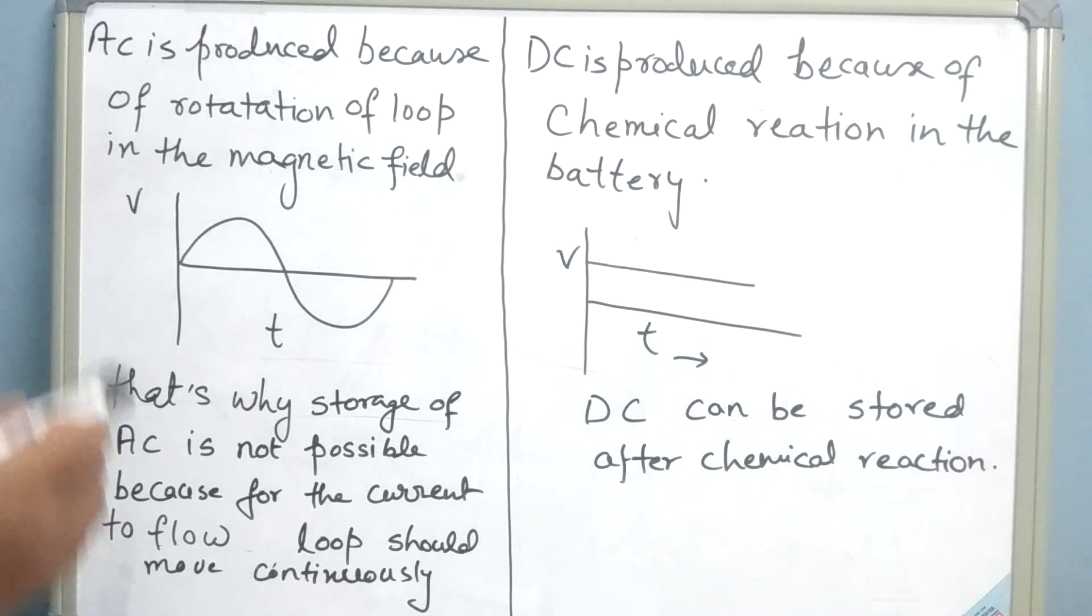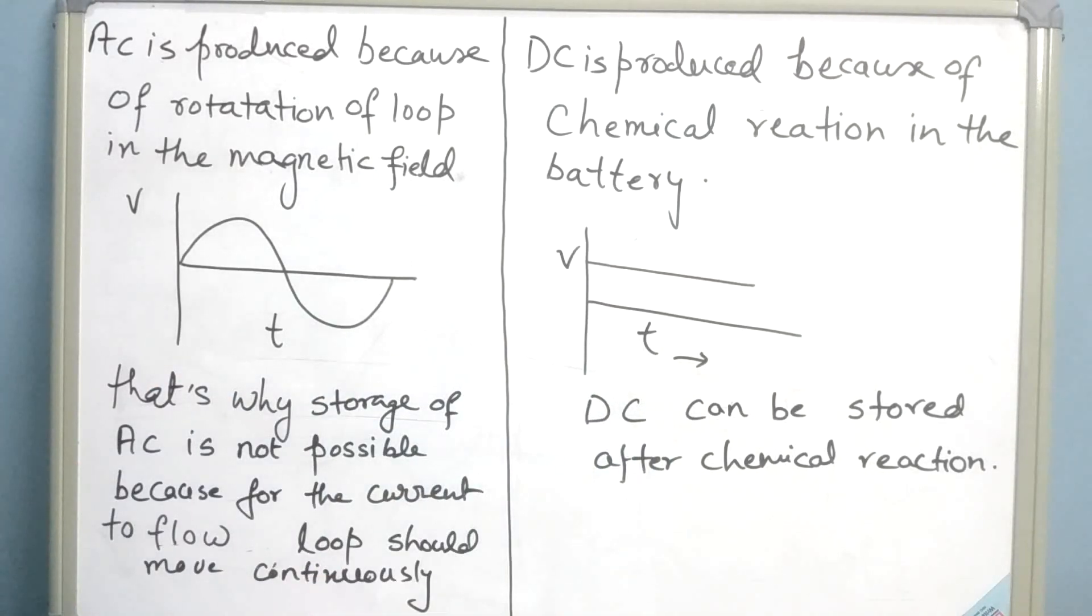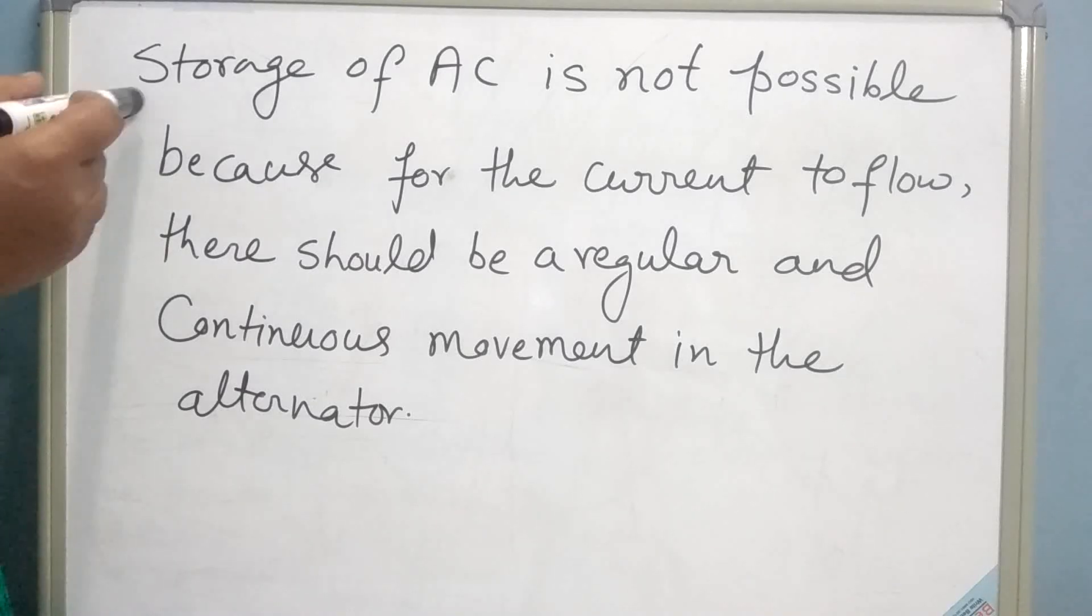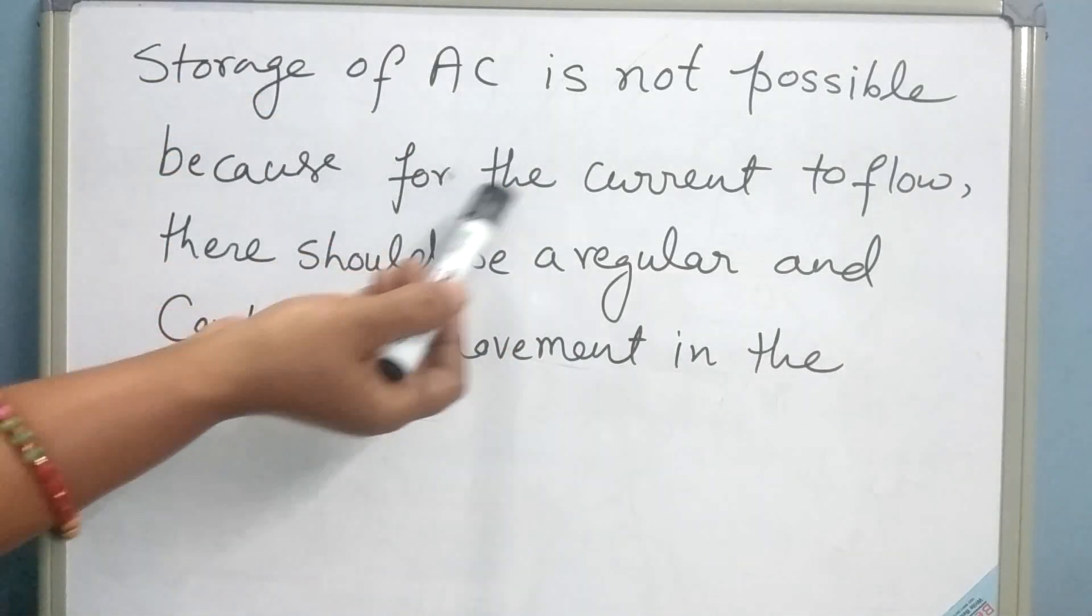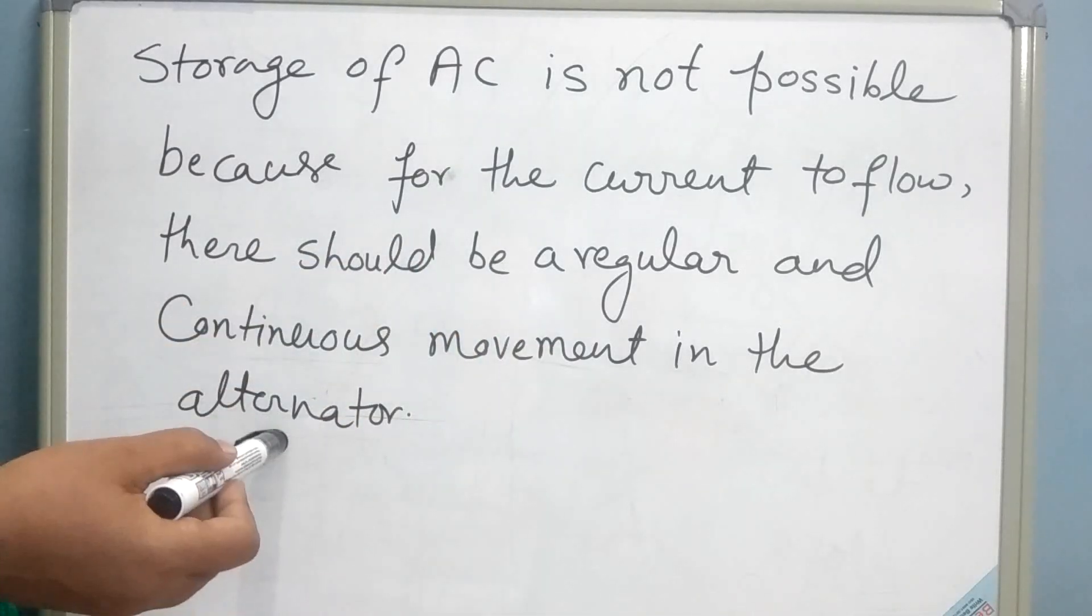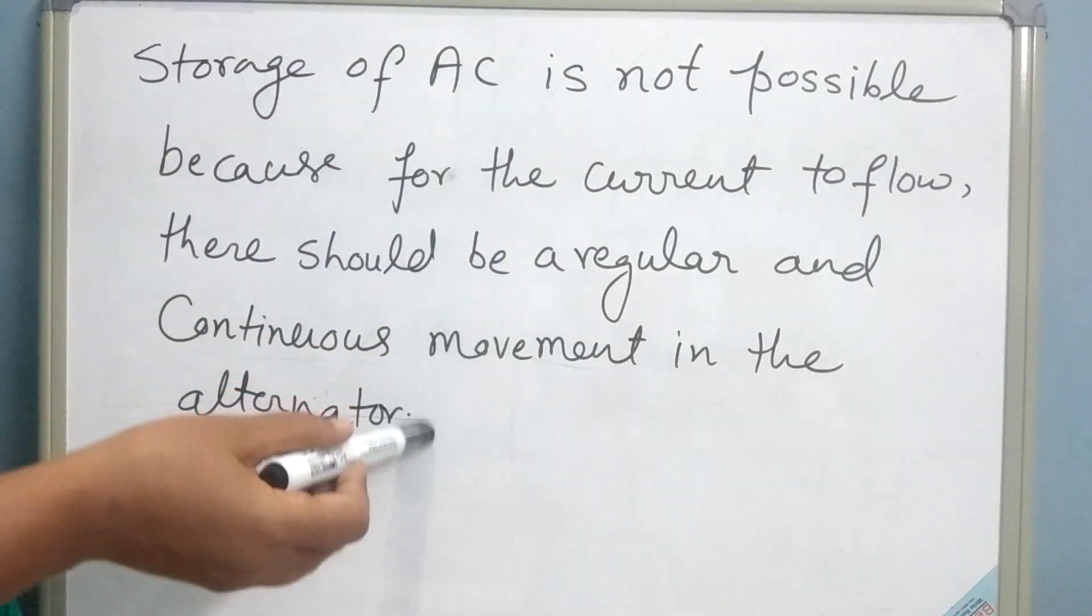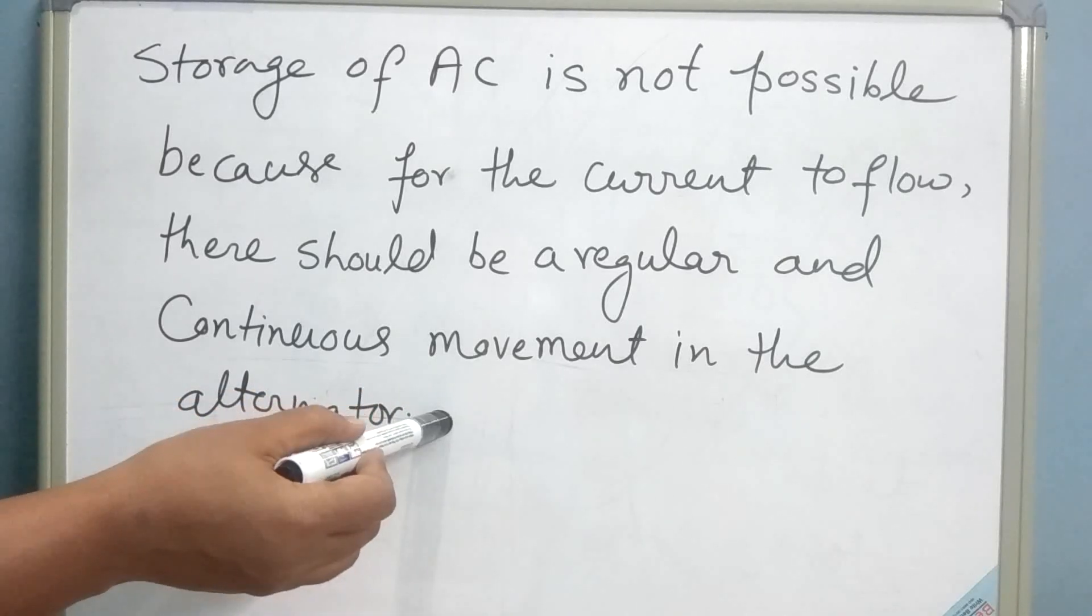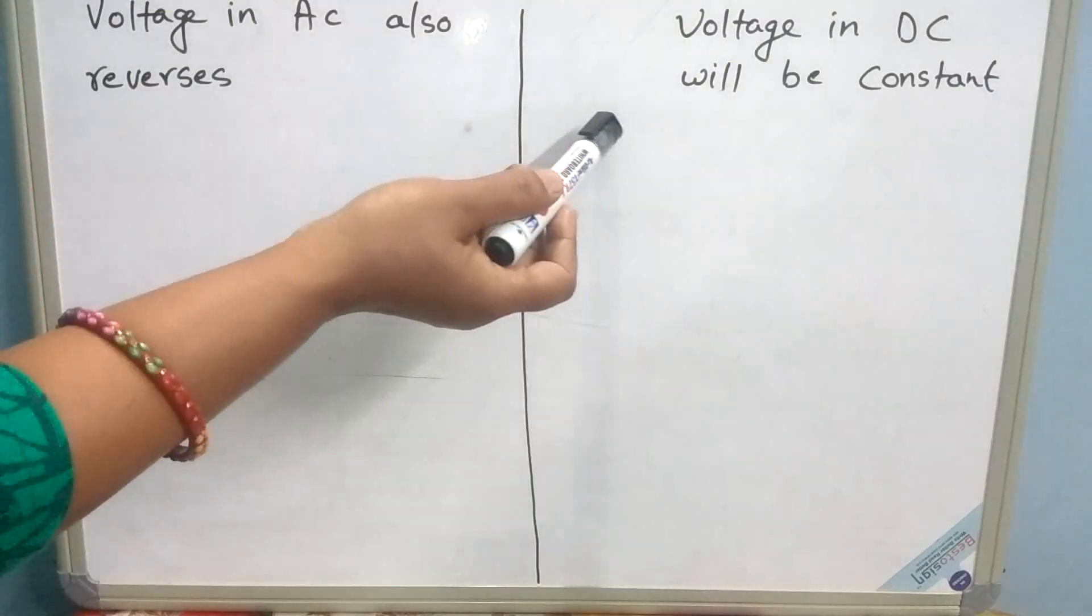That's why it also explains why storage of AC is not possible, whereas we can store DC current after a chemical reaction. Storage of AC is not possible because for the current to flow, there should be a regular and continuous movement in the alternator. That's why you might have heard that when there is a shutdown in the grid, there will be total blackout in the city.